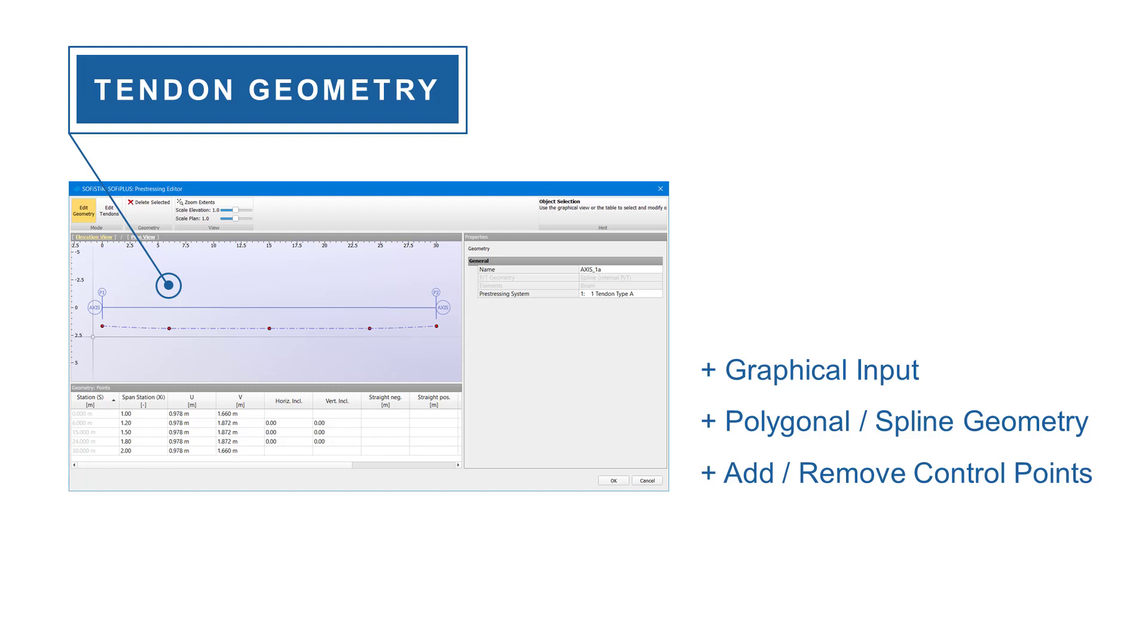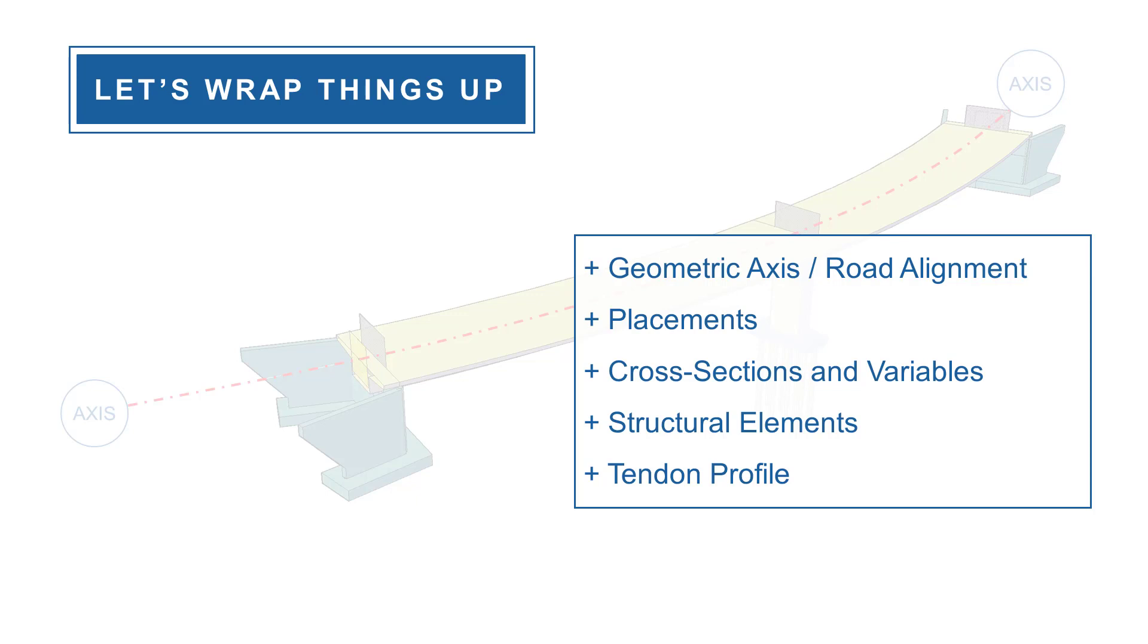Similar to the structural elements, the tendon geometry is now linked to the axis. Any changes to the axis also affect the tendon profile. Now let's wrap things up.